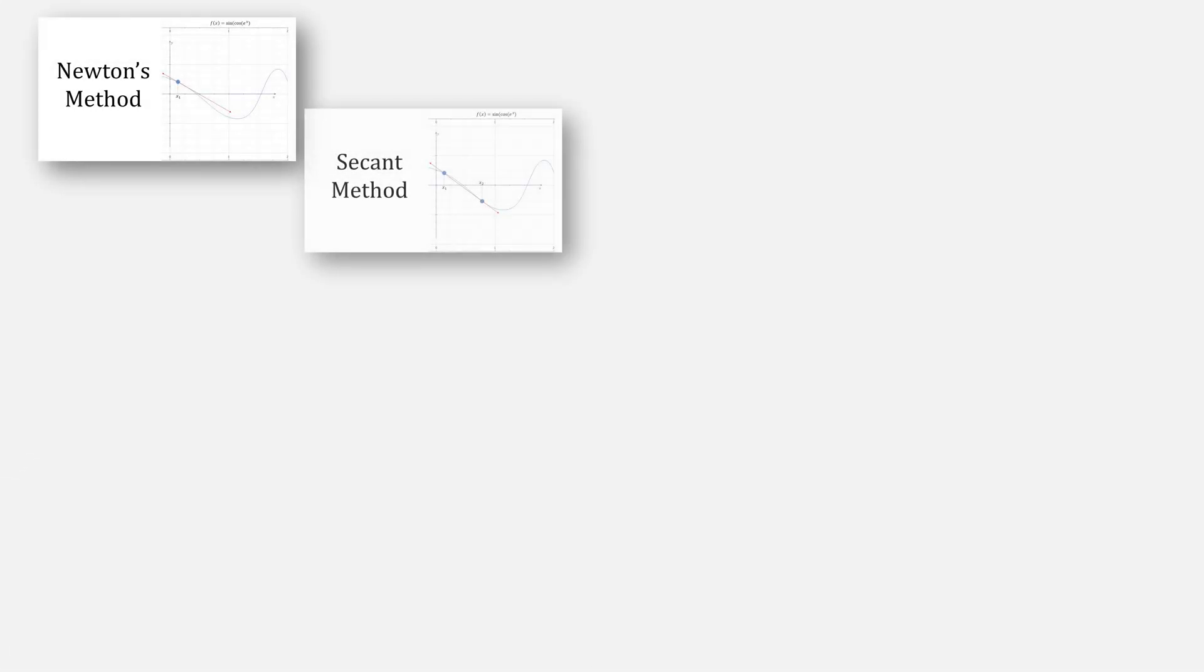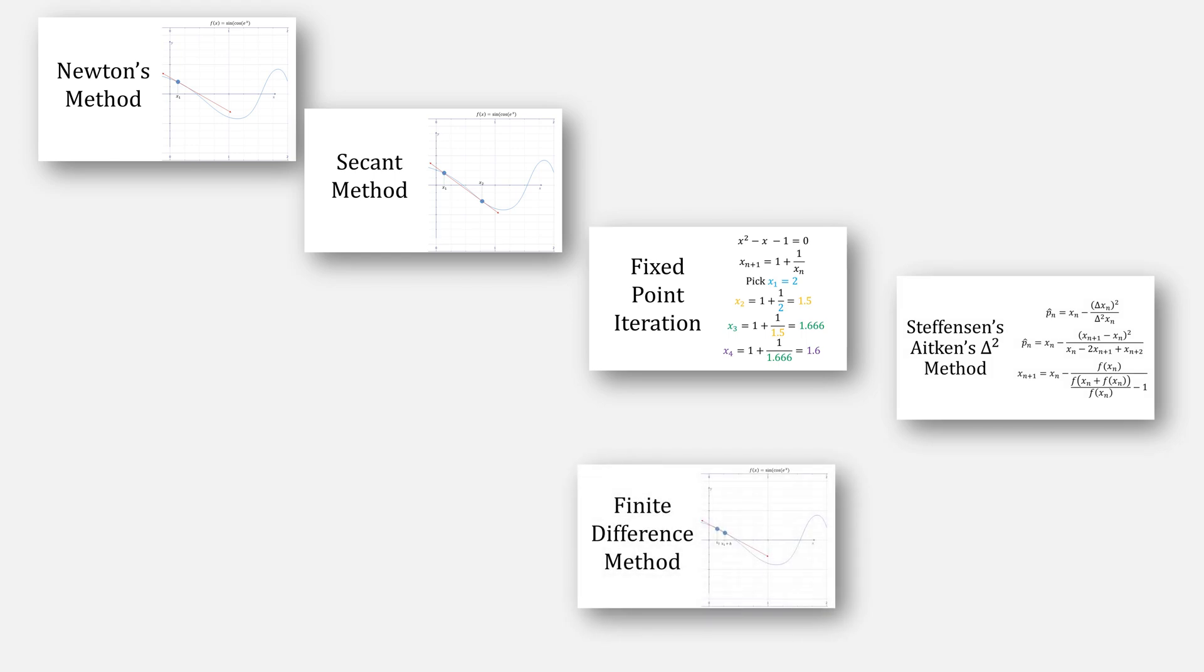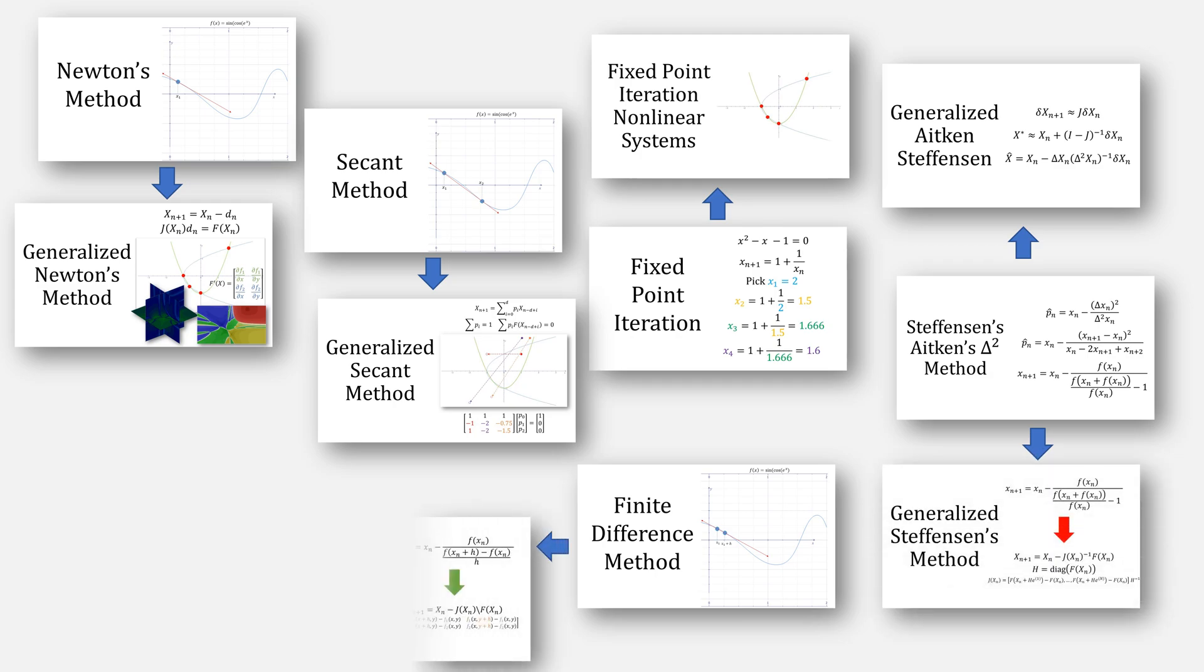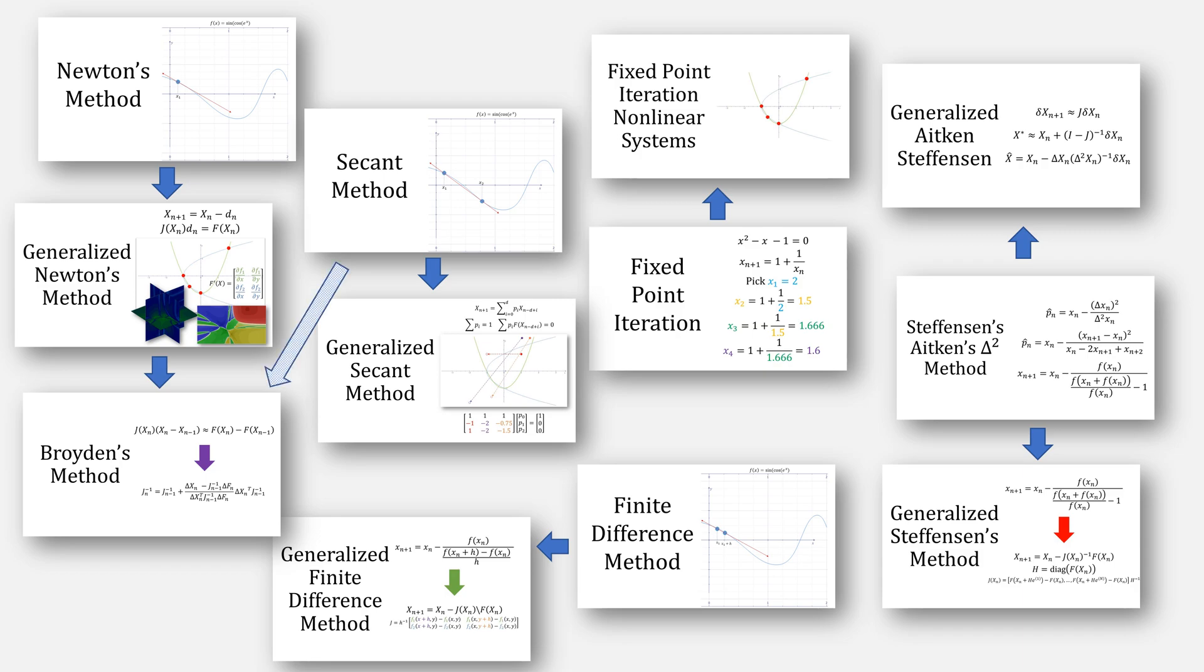Fans of this channel know that I have made many videos solving for roots, which I then generalize for solving systems. For example, generalized Newton's method, generalized Secant method, fixed-point iteration, two versions of Steffensen's method, and finite difference. This video was all about Broyden's method, which comes from generalized Newton's method, but some folks would argue that it comes actually from Secant method.